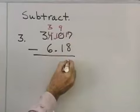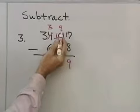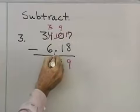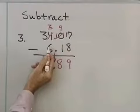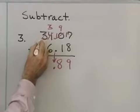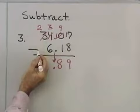8 from 17, then, will be 9. Then, 1 from 9 will be 8. Put the decimal point directly below the decimal points in the problems that are lined up. 6 from 3, I can't do that, so I'm going to borrow one 10 here. So, I'll have two 10s left.